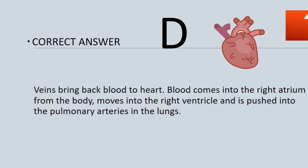The answer is D. Veins bring blood back to the heart. Blood comes into the right atrium from the body, moves into the right ventricle, and is pushed into the pulmonary arteries in the lungs.